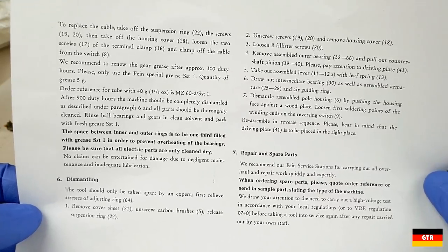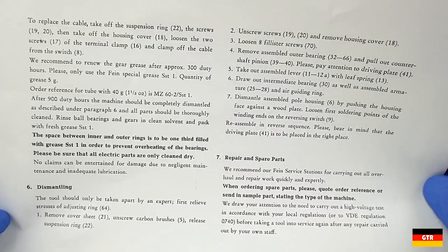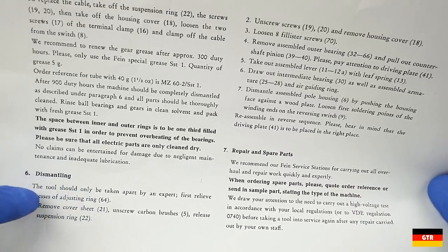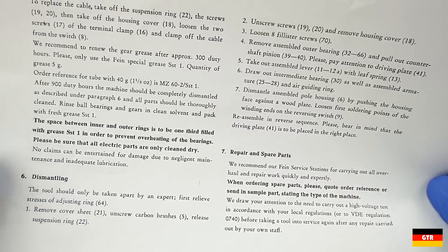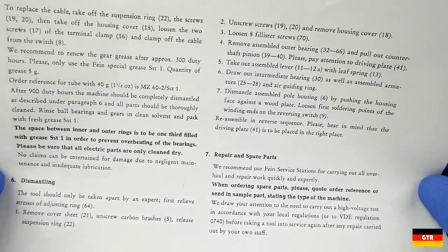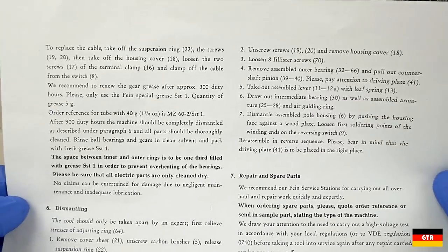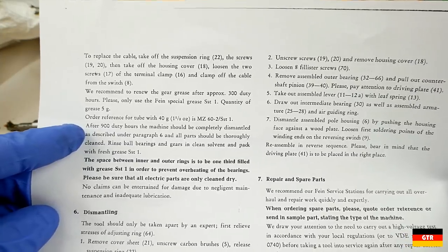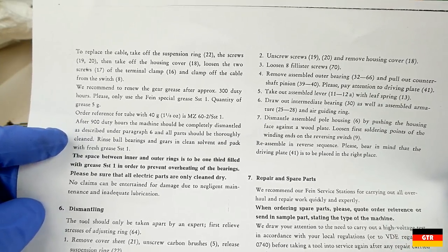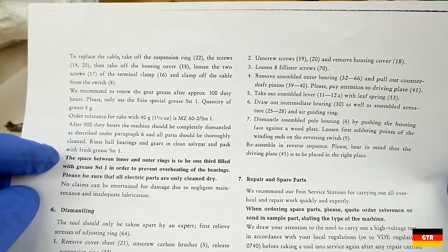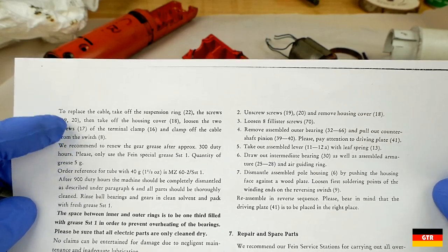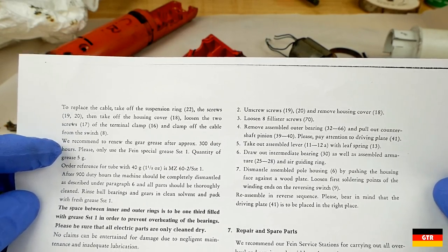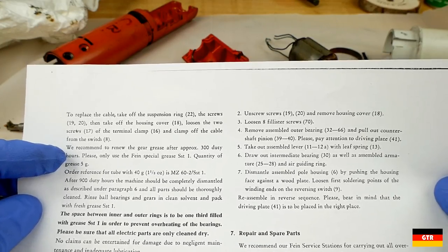So I probably should have read the second page here of that service manual, because there's a whole section here for dismantling. It gives you some very detailed instructions on how to do it. But I also noticed over here, after 900 duty hours, the machine should be completely dismantled and all parts should be thoroughly cleaned. So they give you kind of a schedule on when you're supposed to do some maintenance.